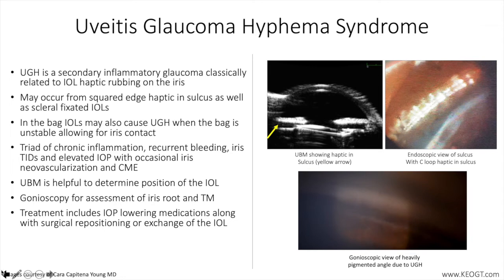Elevation in intraocular pressure can occur due to all factors noted above, with both physical plugging of the trabecular meshwork from pigment, blood, and inflammatory cells, as well as direct mechanical destruction of the trabecular meshwork from compression and/or rubbing against IOL structures.